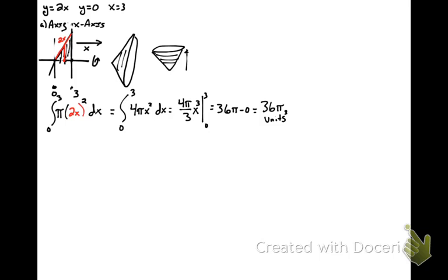Now part B changes this just a little bit. In part B, our axis of rotation has changed. It's now the line y equals 6. So my picture is a little bit different. Instead of rotating everything down here, I'm rotating everything up here along this horizontal line. So that changes things.